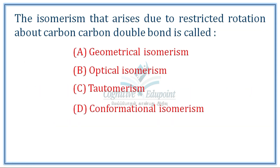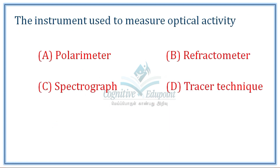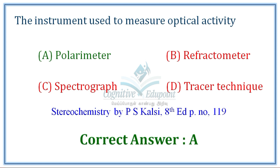Next question: the isomerism that arises due to restricted rotation about a carbon-carbon double bond is called geometrical isomerism. Single bond restricted rotation gives atropisomerism (biphenyls). But C=C double bond restricted rotation isomers are called geometrical isomers or diastereomers. Correct answer is A. Next: the instrument used to measure optical activity is a polarimeter. Correct answer is A.